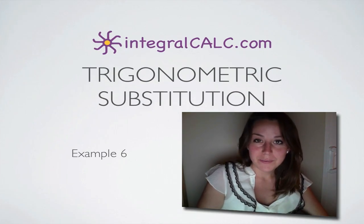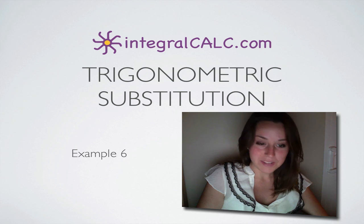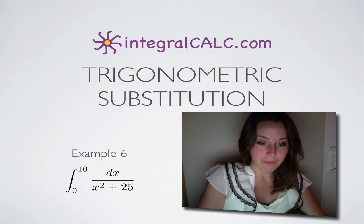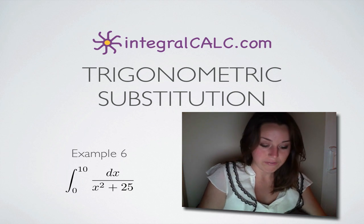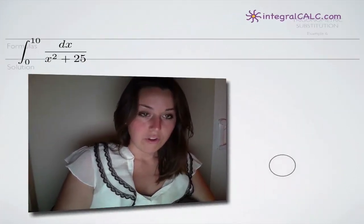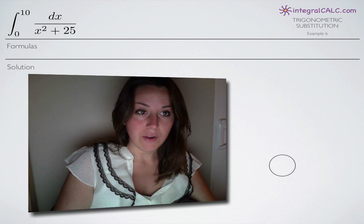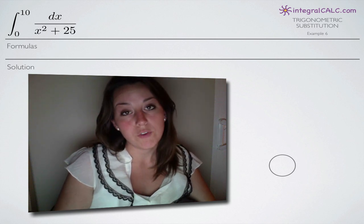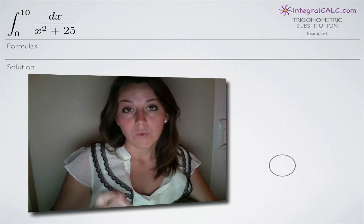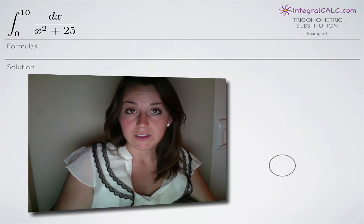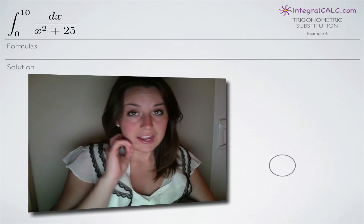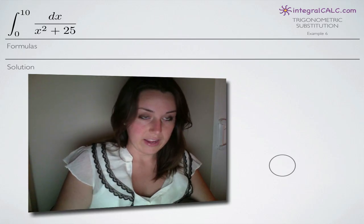We're going to be doing another trigonometric substitution problem today. We're given the integral on the range 0 to 10 of dx divided by the quantity x squared plus 25. First, we're going to talk about how to set up our trigonometric substitution problem. We'll need a couple of formulas, then make substitutions, simplify the integral, integrate on the range 0 to 10, and then simplify and solve.